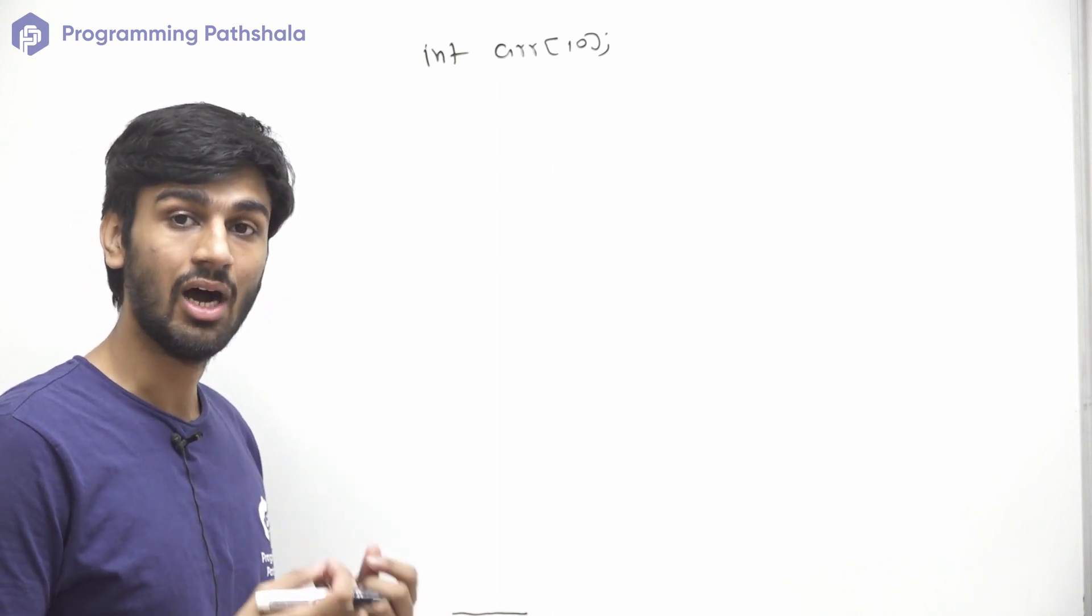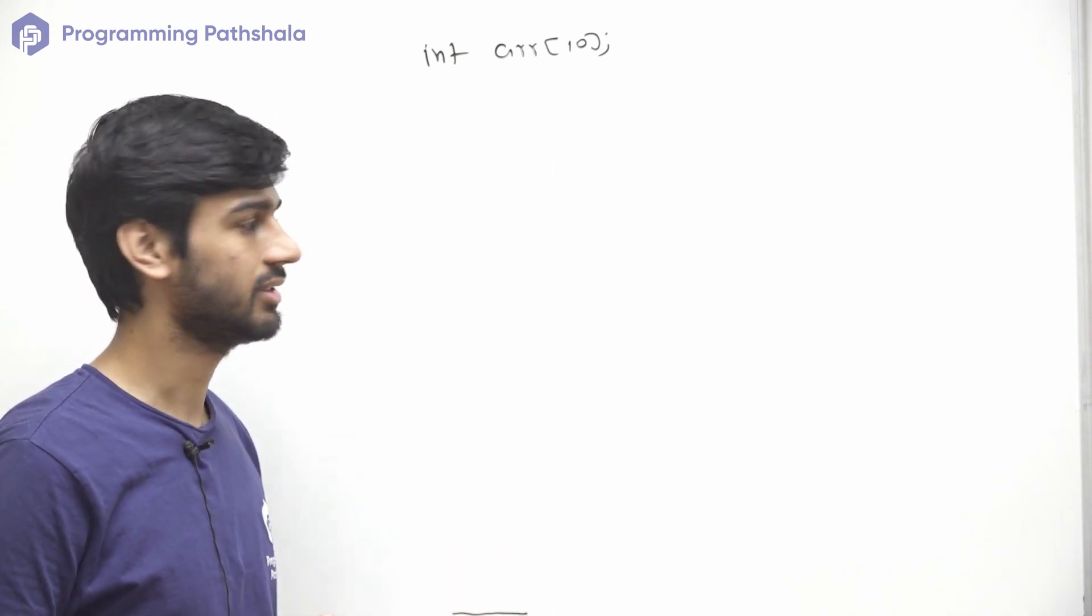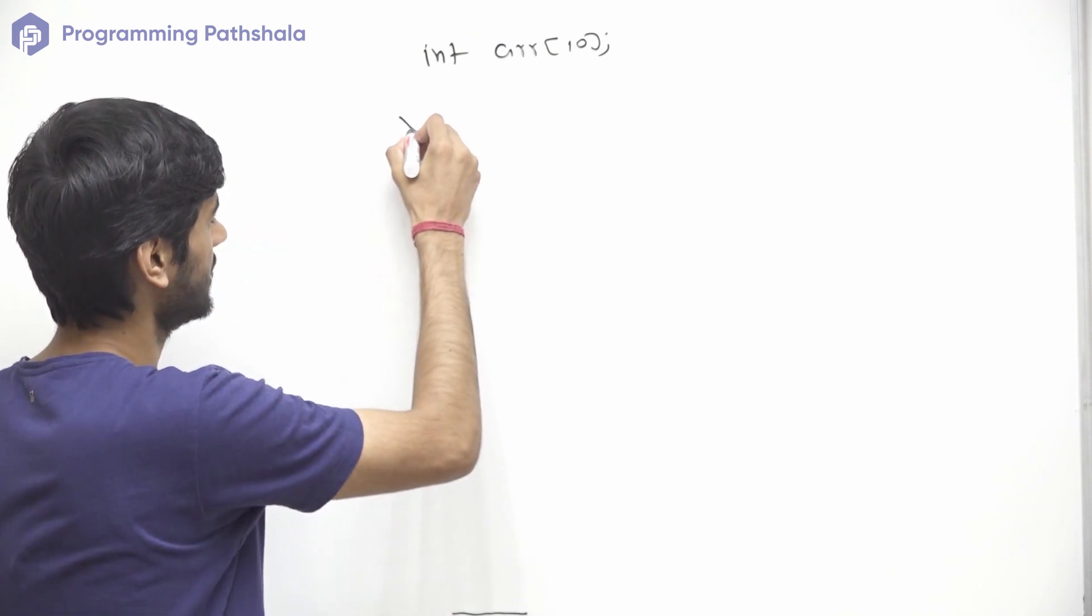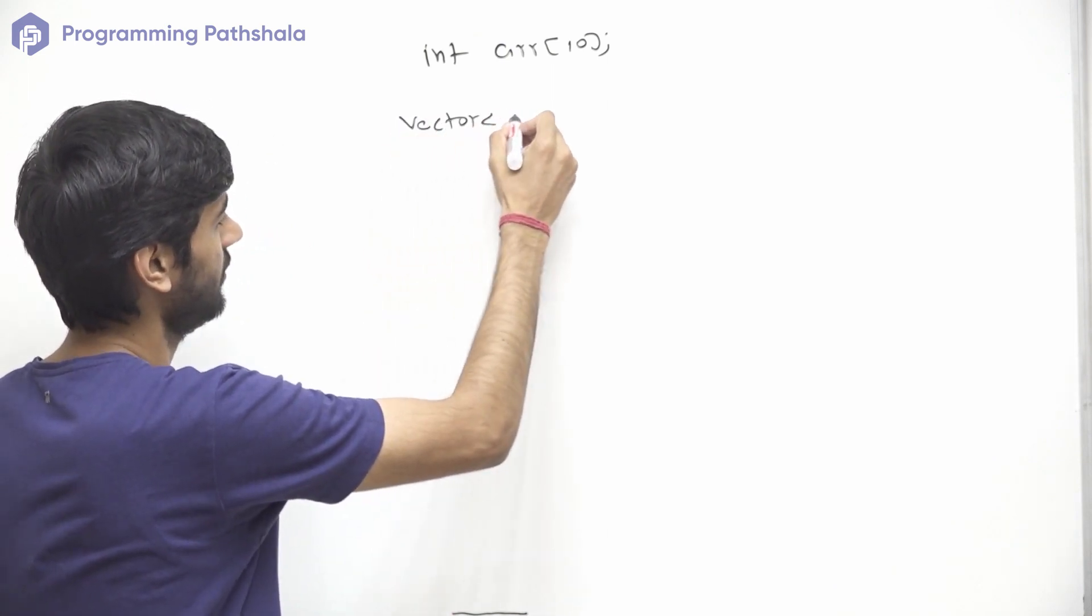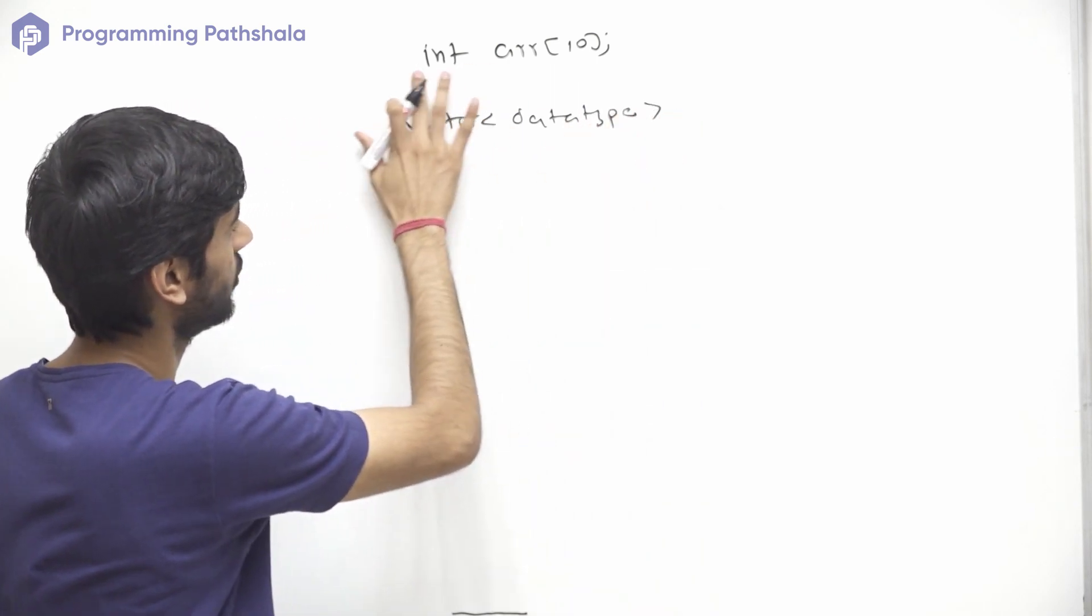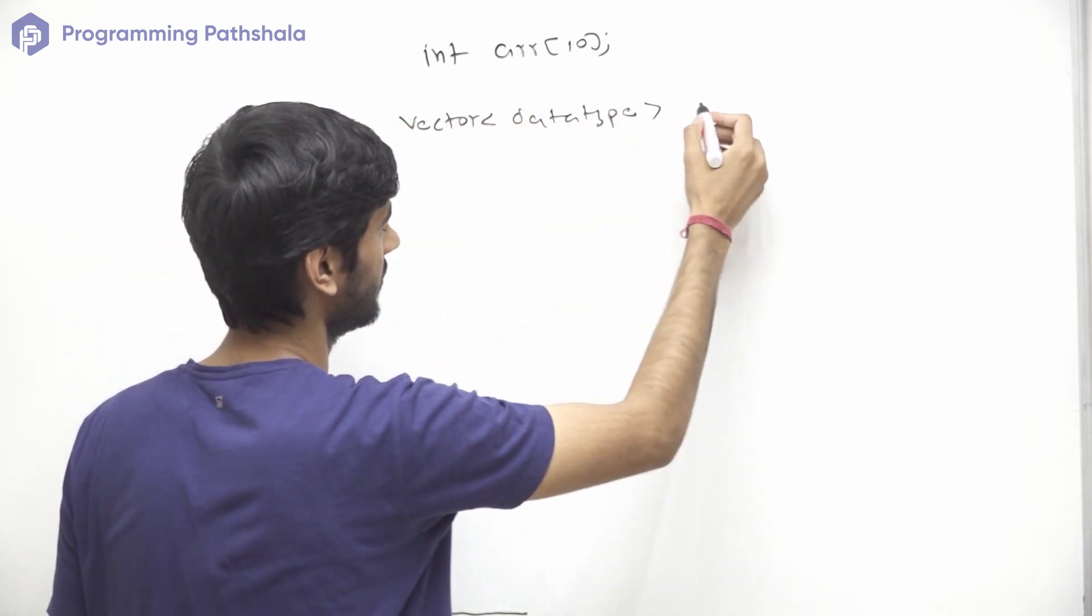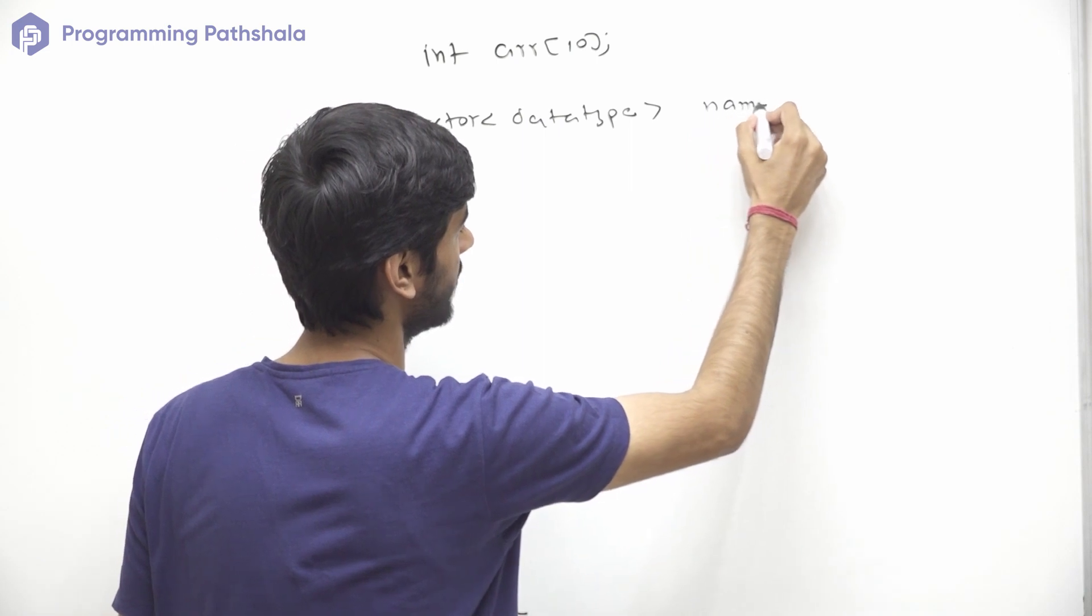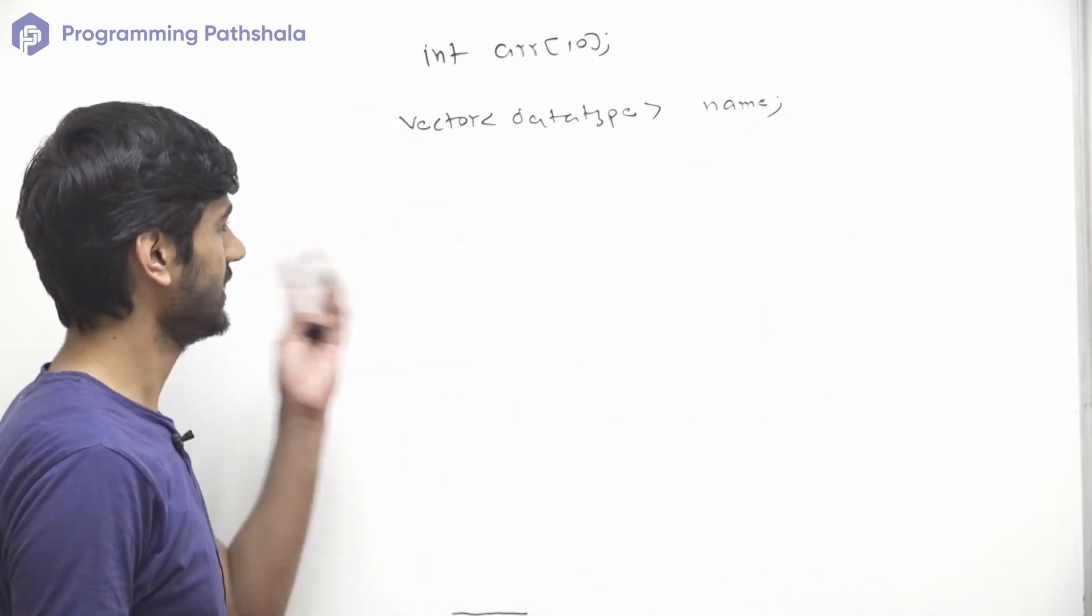So the second question is: how to initialize a vector? We can initialize a vector using this keyword 'vector', then we need to provide data type, then we need to provide a name to this vector. So let's take an example.